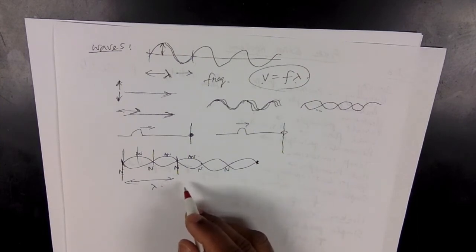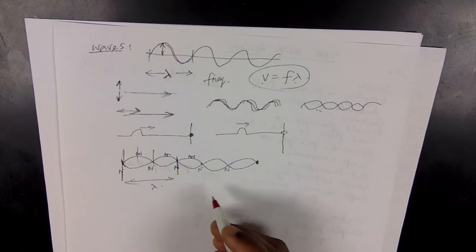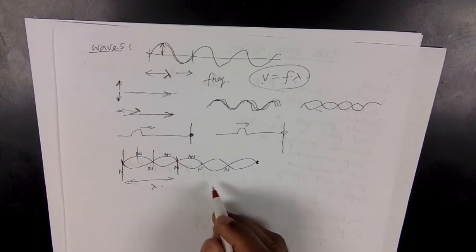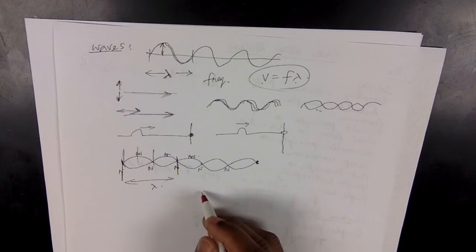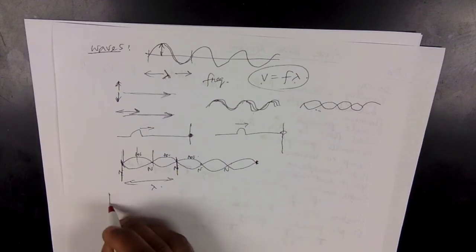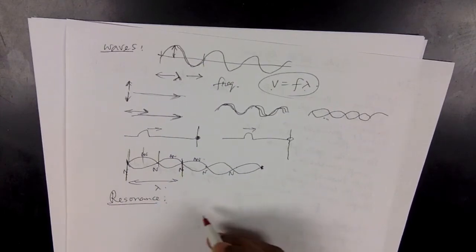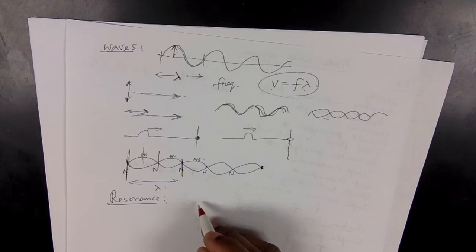Standing waves are formed when you pluck a guitar string — that's a standing wave. You should also know the term resonance. When the natural frequency of vibration of an object is matched by a forcing frequency, the amplitude builds up — that is called resonance.